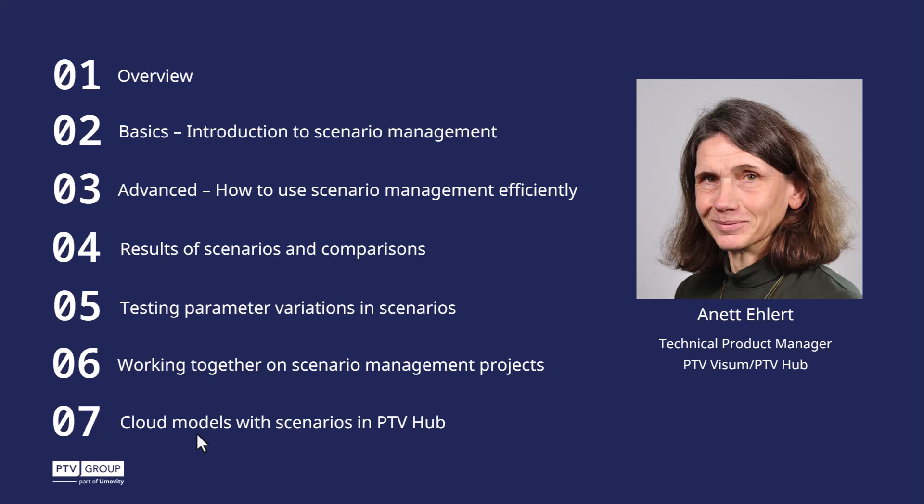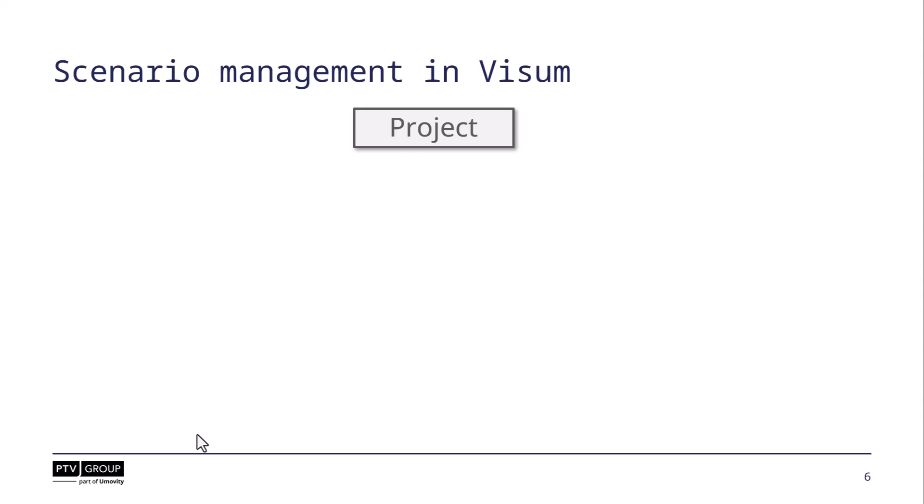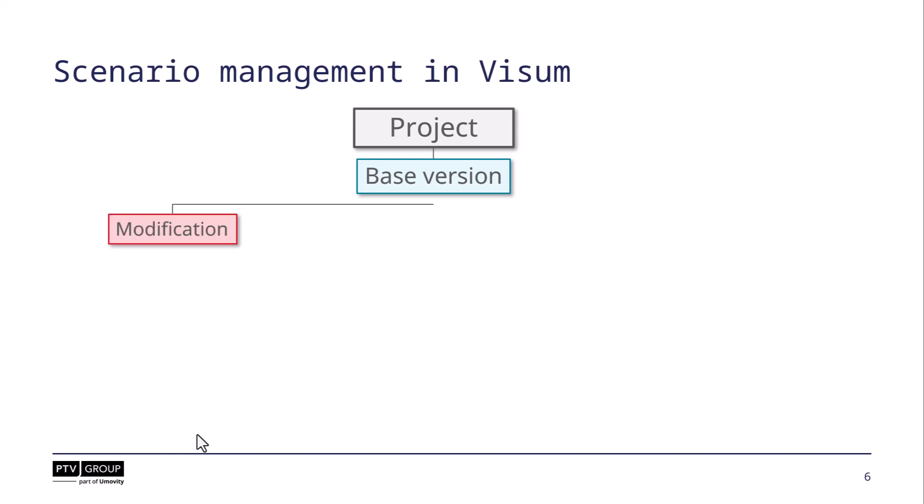So let's have a look at the components of scenario management. Scenario management in Visum is organized as a project. Each project needs at least the so-called base version — that is essentially a Visum version file that represents the initial state of the model and is also the starting point for creating scenarios. You can then change the base version and save these changes as so-called modifications.